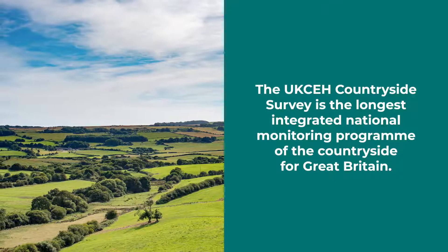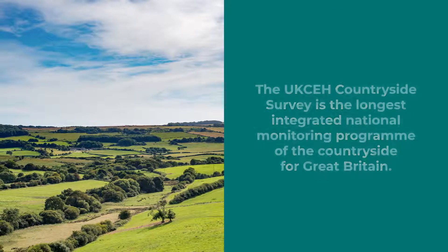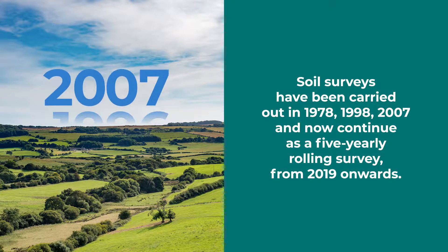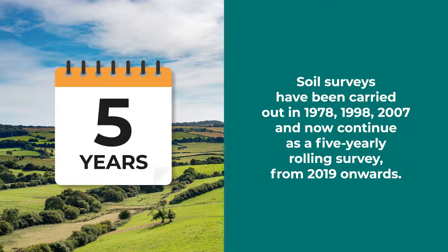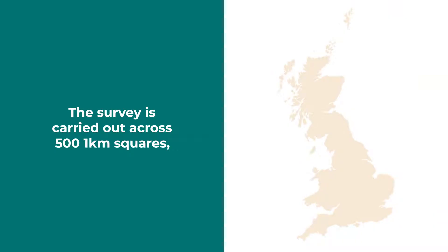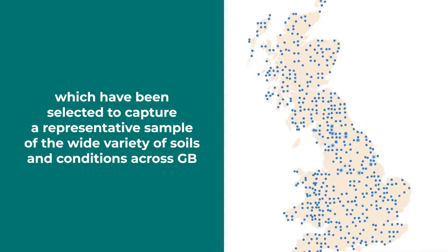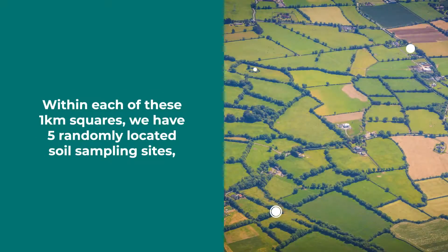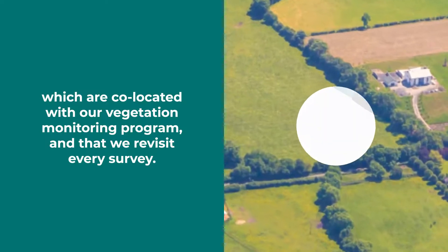The UKCEH Countryside Survey is the longest integrated national monitoring program of the countryside for Great Britain. Soil surveys have been carried out in 1978, 1998, 2007, and now continue as a five-yearly rolling survey from 2019 onwards. The survey is carried out across 501 km squares selected to capture a representative sample of the wide variety of soils and conditions across GB. Within each of these 1 km squares we have five randomly located soil sampling sites, which are co-located with our vegetation monitoring program and that we revisit every survey.